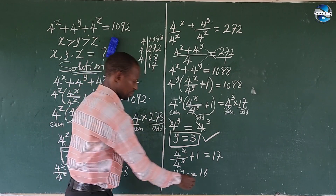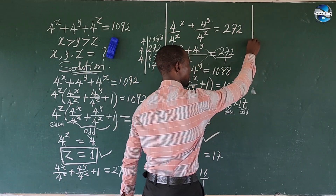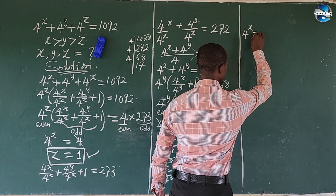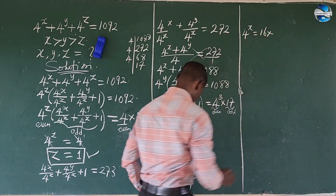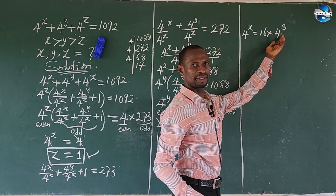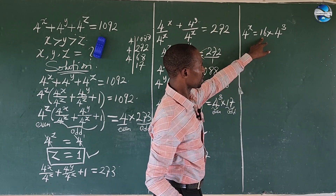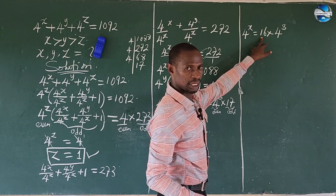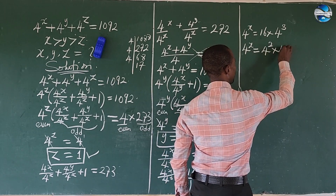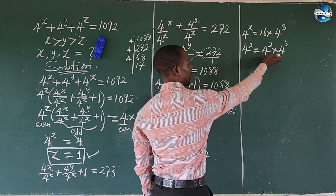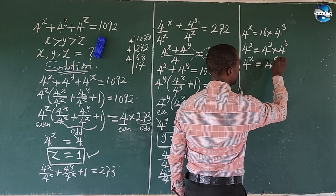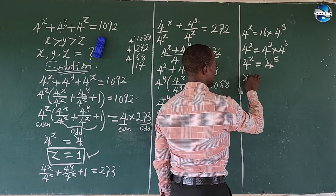So we cannot cross multiply because this is all over an invisible 1. From here, 4 to the power of x equals 16 times 4 to the power of 3. Since 16 can be expressed in base 4 as 4 to the power of 2, we now have 4 to the power of x equals 4 to the power of 2 times 4 to the power of 3. The bases are the same and we have a multiplication sign, so we add the powers: 4 to the power of x equals 4 to the power of 5. The bases are the same with an equality sign, so x equals 5.